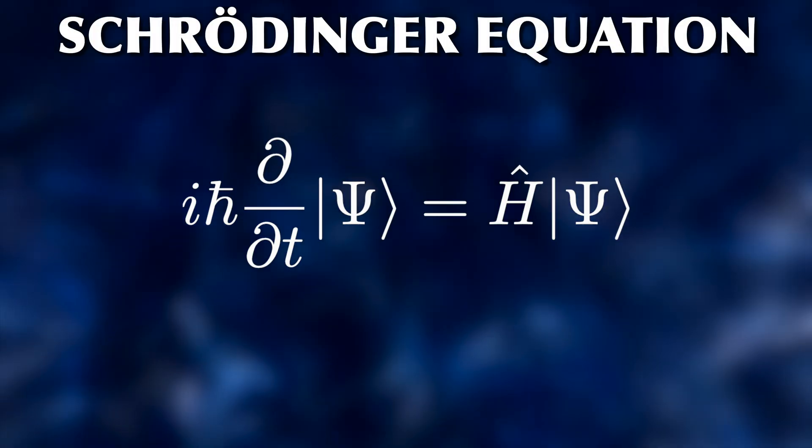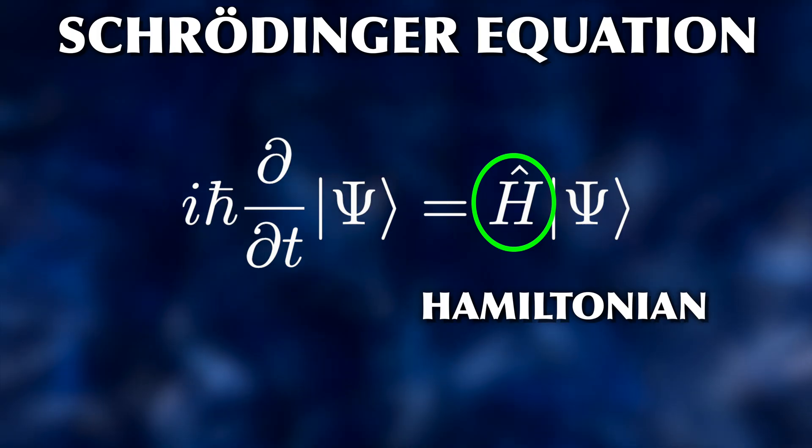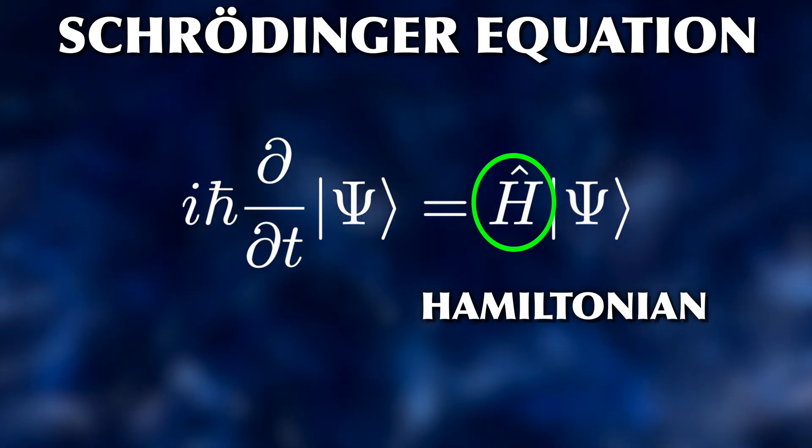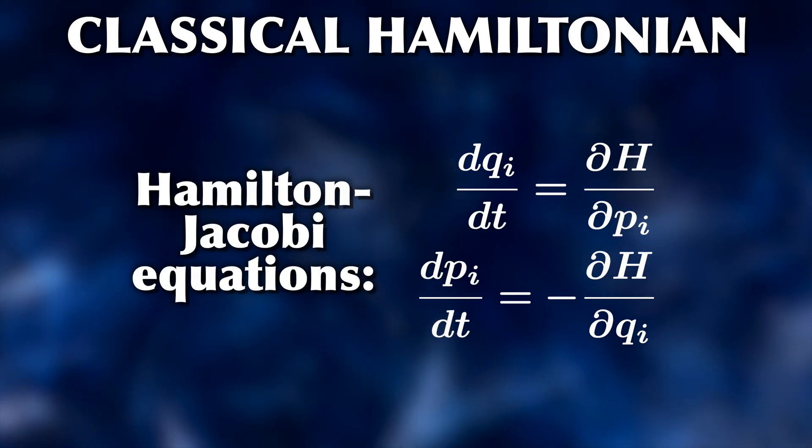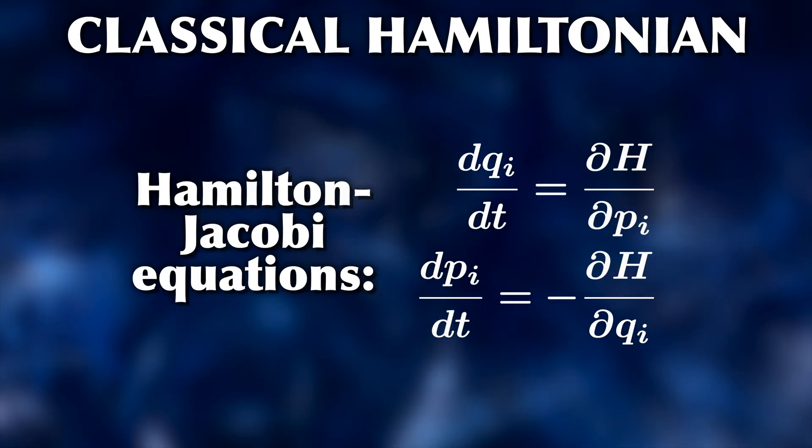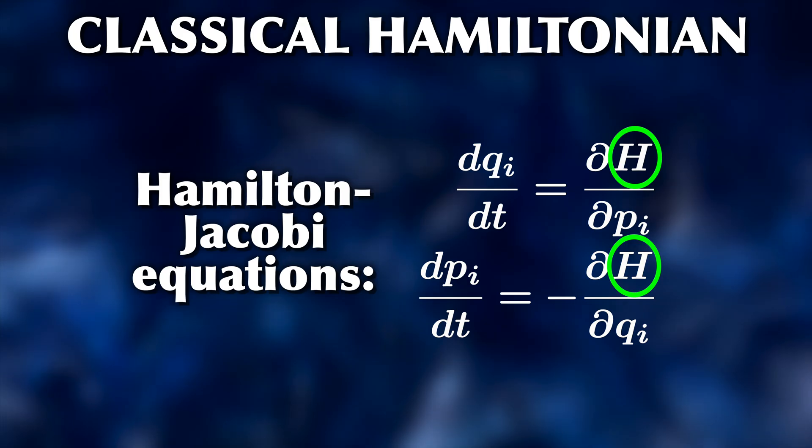The H in the Schrödinger equation is the Hamiltonian, which describes the dynamics of the system, how the different parts interact with each other. We can also use the Hamiltonian to calculate time evolution for classical systems. So finding the Hamiltonian again here isn't a huge surprise exactly.